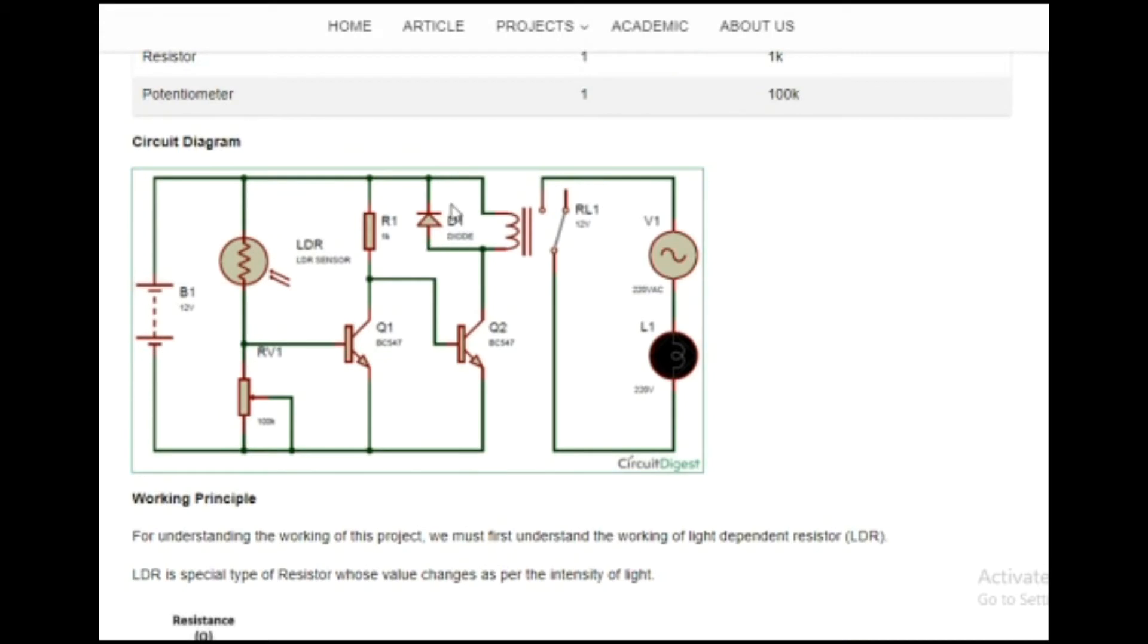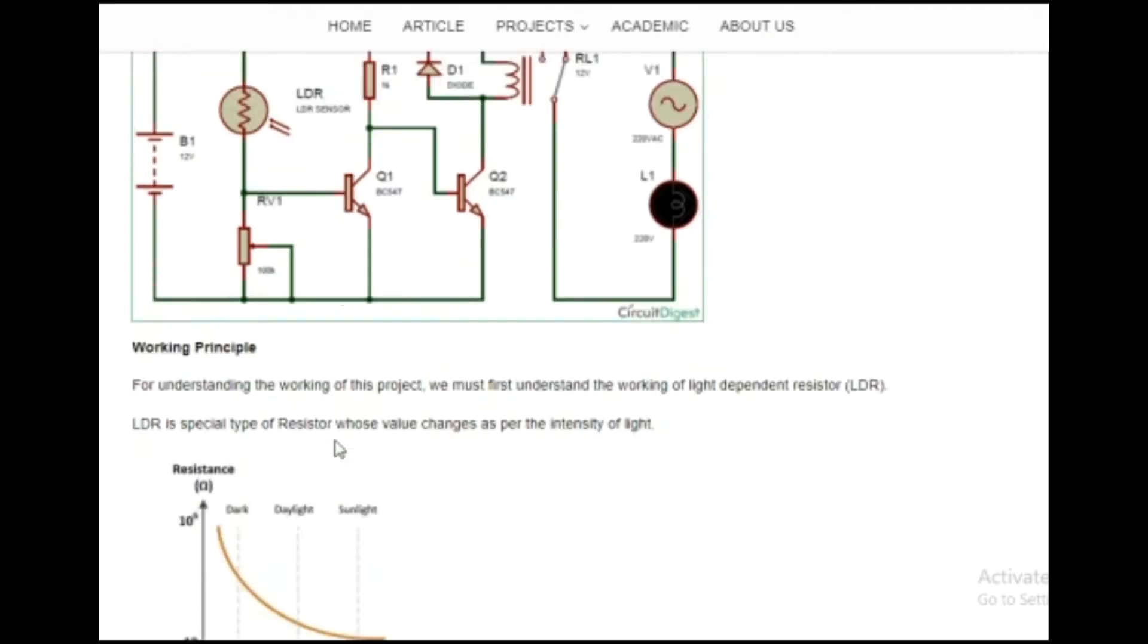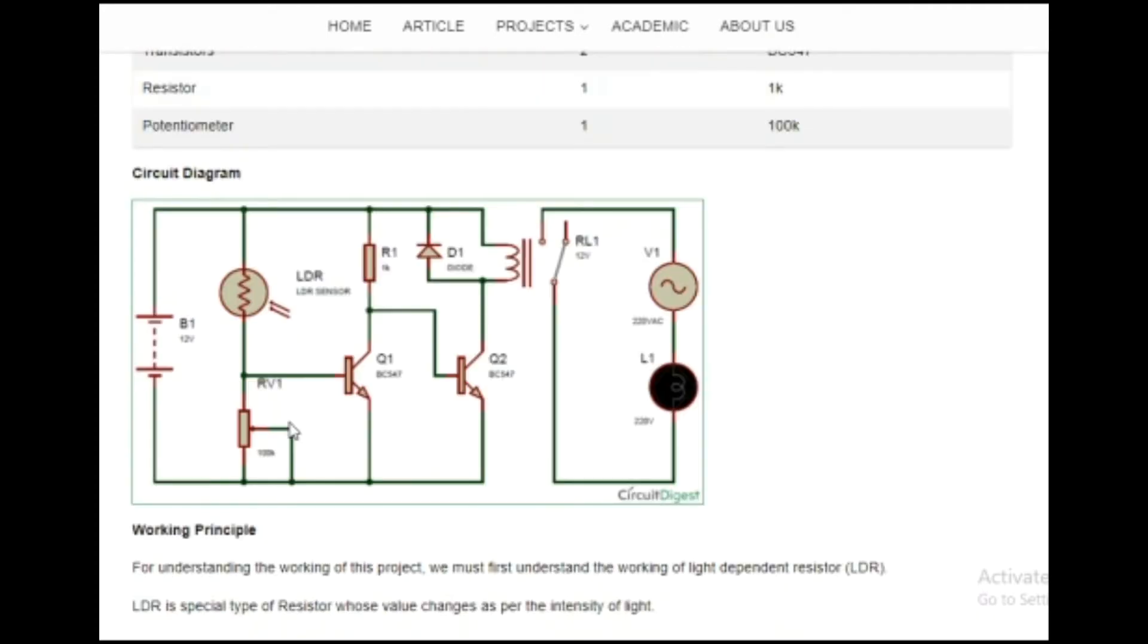This is a flyback diode which is used to protect the circuit from back EMF. This is the potentiometer, and by tuning this we can select a point at which we want the result. There are two transistors and a relay which are basically used for switching purposes.